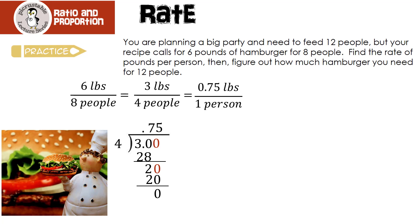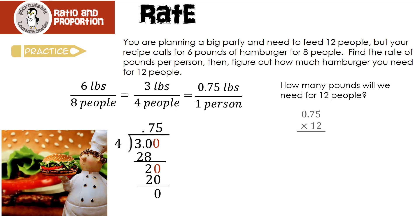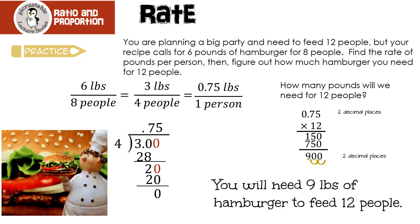Our question also asks: once we find the rate of pounds per person, figure out how much hamburger is needed for 12 people. If we need 0.75 pounds for one person, we're going to multiply 0.75 times 12. 5 times 2 is 10; carry the 1. 2 times 7 is 14, plus 1 is 15, giving 150. 1 times 5 is 5, 1 times 7 is 7; add down to get 900. We have two decimal places, so move two decimal places in the answer. That means you will need 9 pounds of hamburger to feed 12 people.